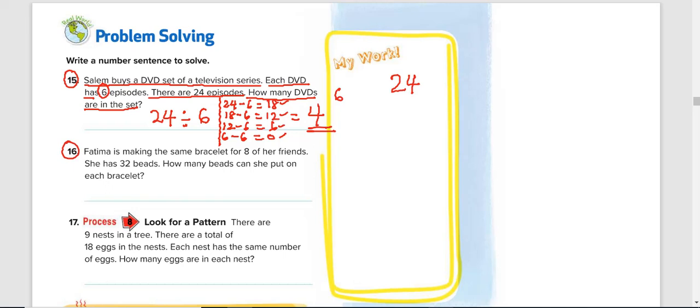Question number 16. Try this by yourself. Fatima is making the same bracelet for 8 of her friends. She has 32 beads. So in total, she has 32 beads. The same bracelet for how many friends? 8 friends. So to know how many beads can she put on each bracelet is to do 32 divided by 8. And if you do that, you get 4. Alright, I'm going to see you in the next video. Take care of yourself and bye bye.